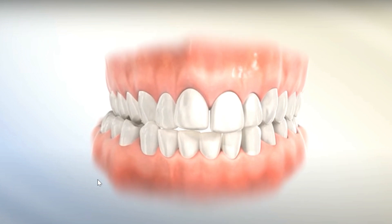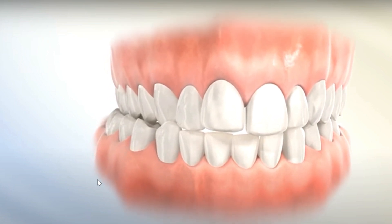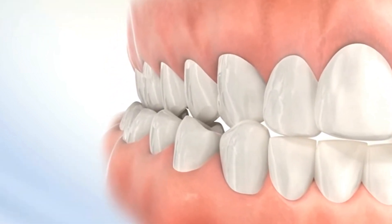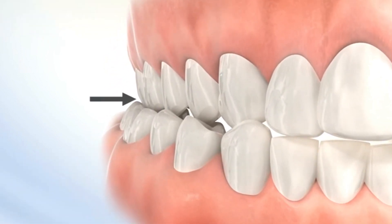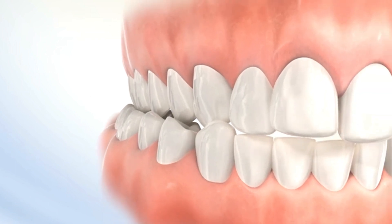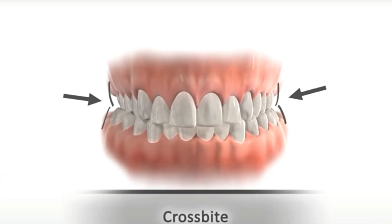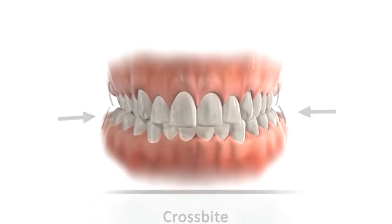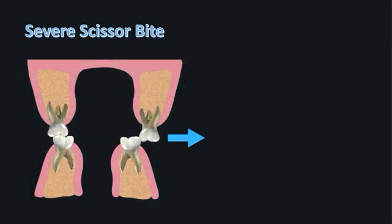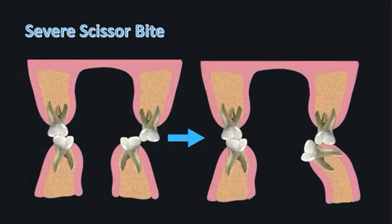Posterior crossbite is a transverse discrepancy in arch relationship. The lower arch is wider than the upper so that the buccal cusps of the lower teeth occlude outside the buccal cusps of the corresponding upper teeth. Scissors bite is when one or more upper buccal segment teeth occlude entirely buccal to the lower arch teeth.